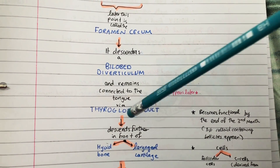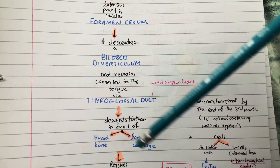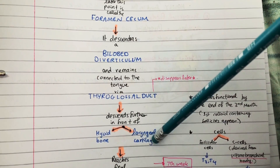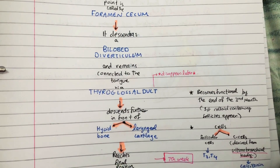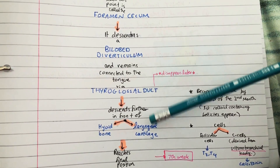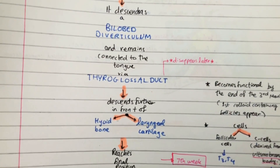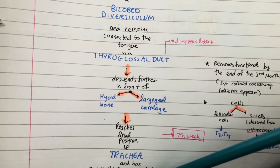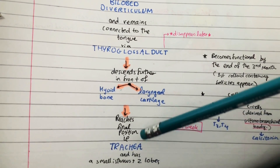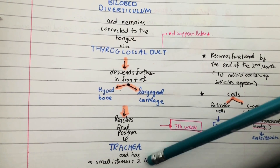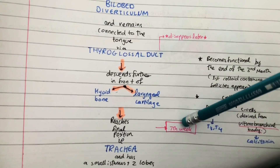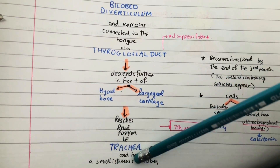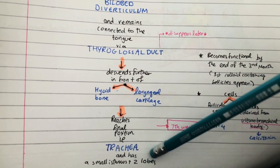The thyroid descends further in front of the hyoid bone and the laryngeal cartilages — it's basically just descending. It then reaches its final position at the trachea, and at about the seventh week it has a small isthmus and two lobes.